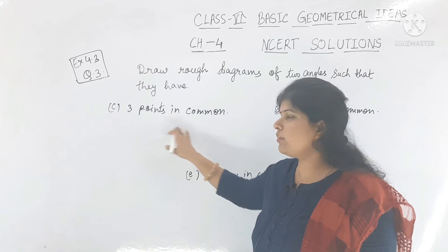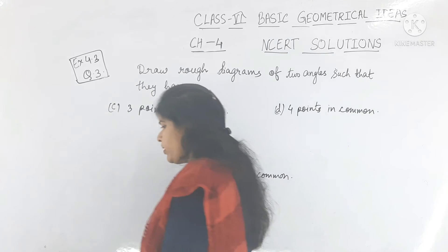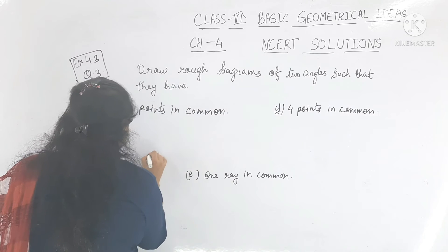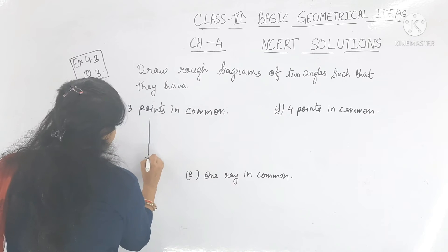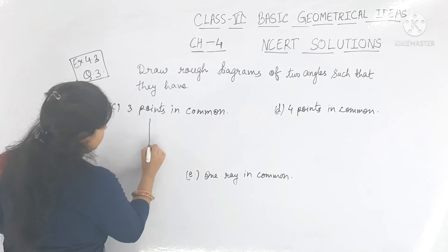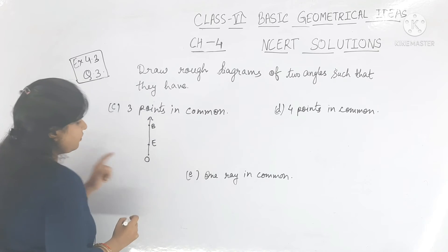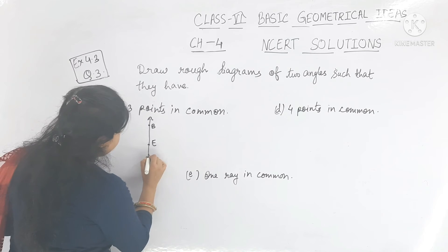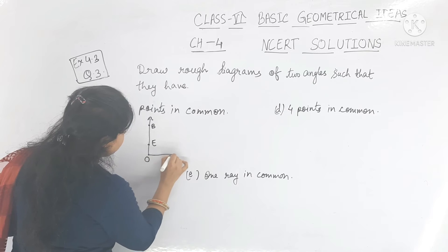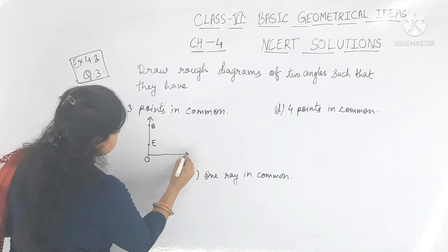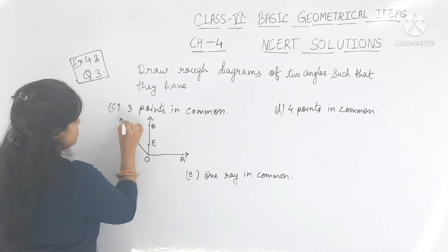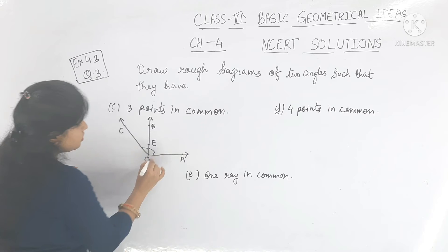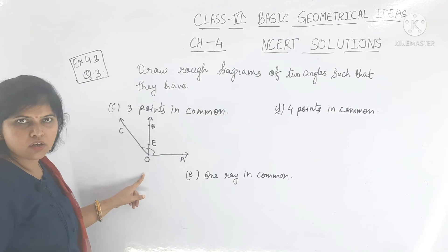Now, part C: three points in common. In one line I am putting three points — O, E, and B — with A and C forming the two angles, and three points are common.